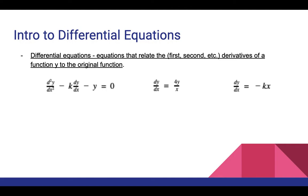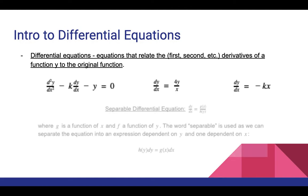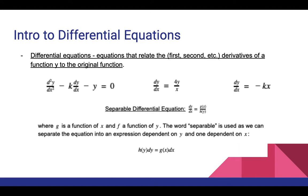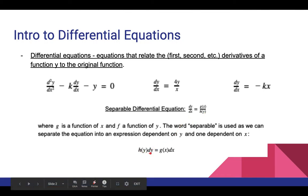The main technique we have for differential equations is separation of variables. A separable differential equation is an equation of the form dy/dx equals g(x) divided by h(y), where g is a function of x and h is a function of y. The word separable is used because we can separate the equation into an expression dependent on y and one dependent on x. Multiplying both sides by h(y) and dx gives us h(y) dy equals g(x) dx.